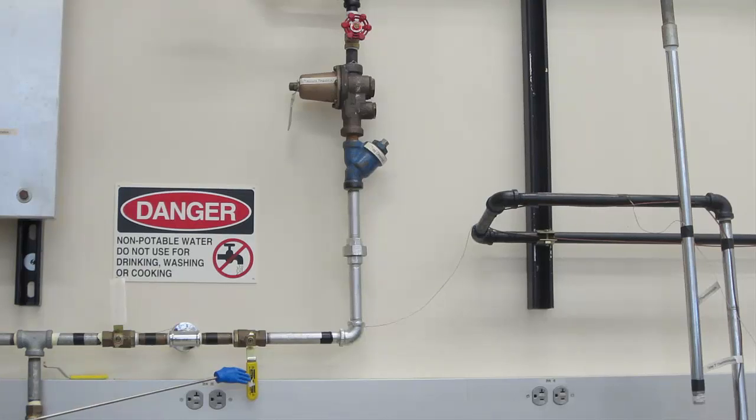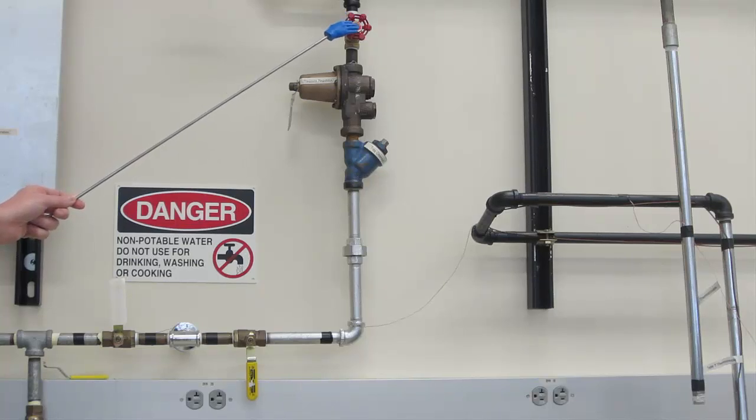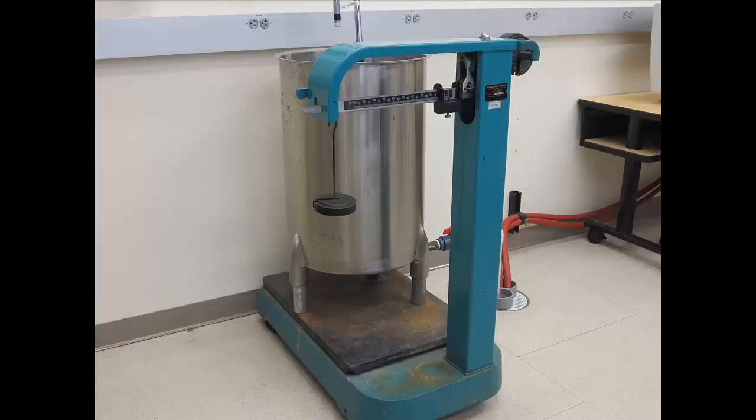Now first we have the on-off valve at the wall, which allows water to flow in the pipe. Then there is a red flow control valve further up, which is shown here. You will be adjusting the flow rate by measuring the weight of water collected over a period of time in the barrel, shown here.